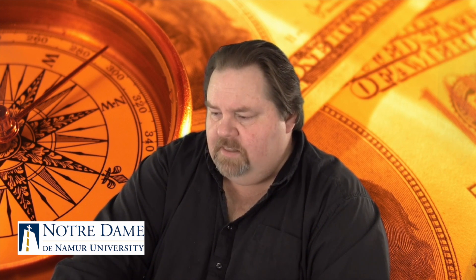That's the zero growth model. In a dividend stock, the zero growth model gives us: the dividend divided by R gives you the perpetuity, which is the price today. So if the dividend is $2 and the required return is 10%, you have $2 divided by 10%, making the stock worth $20. You would pay $20 for a $2 dividend and get 10% back on your return over time.